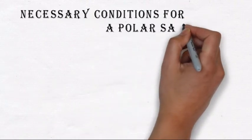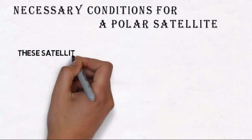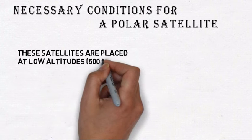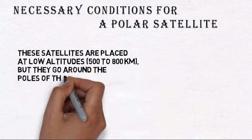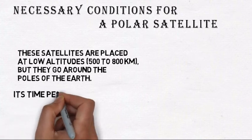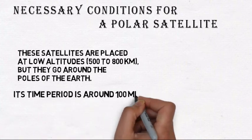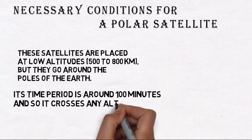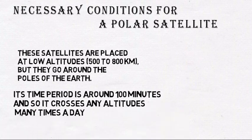Necessary conditions for a polar satellite: These satellites are placed at low altitudes but they go around the poles of the earth. Their time period is around 100 minutes, and so a polar satellite crosses any altitude many times a day.